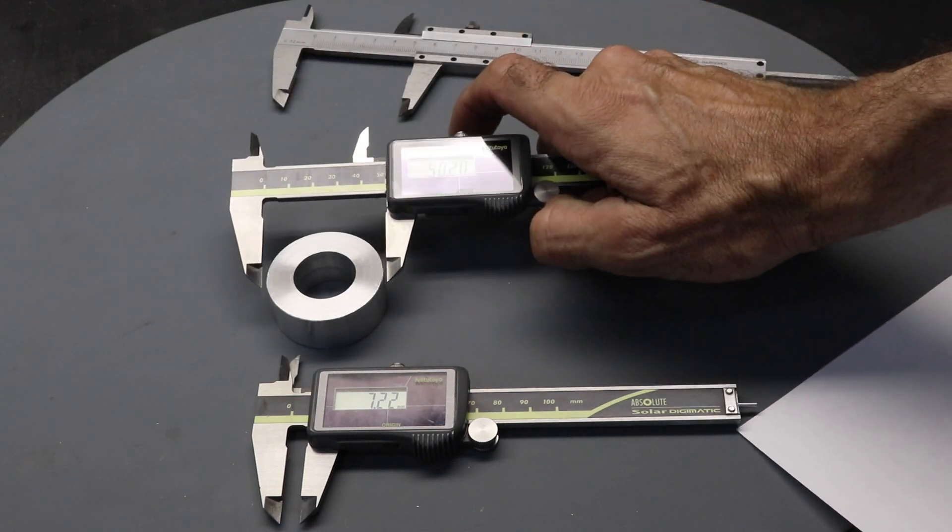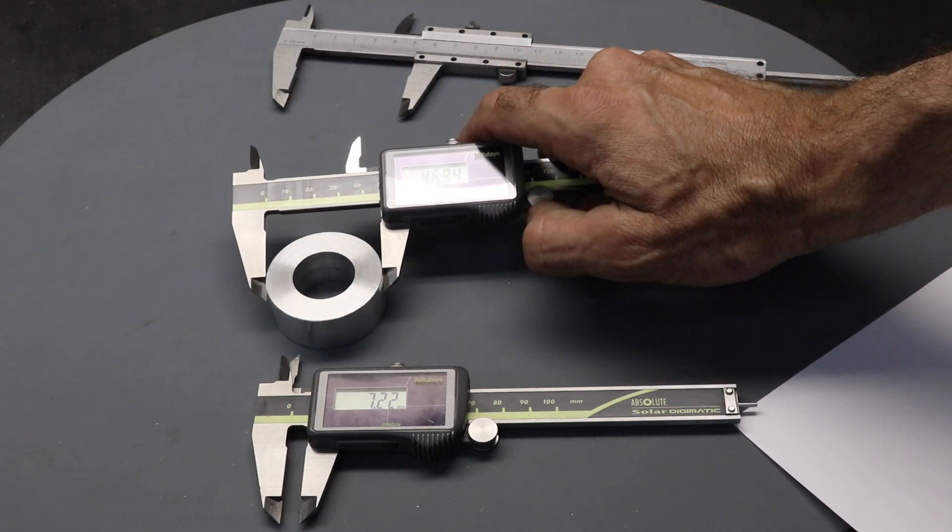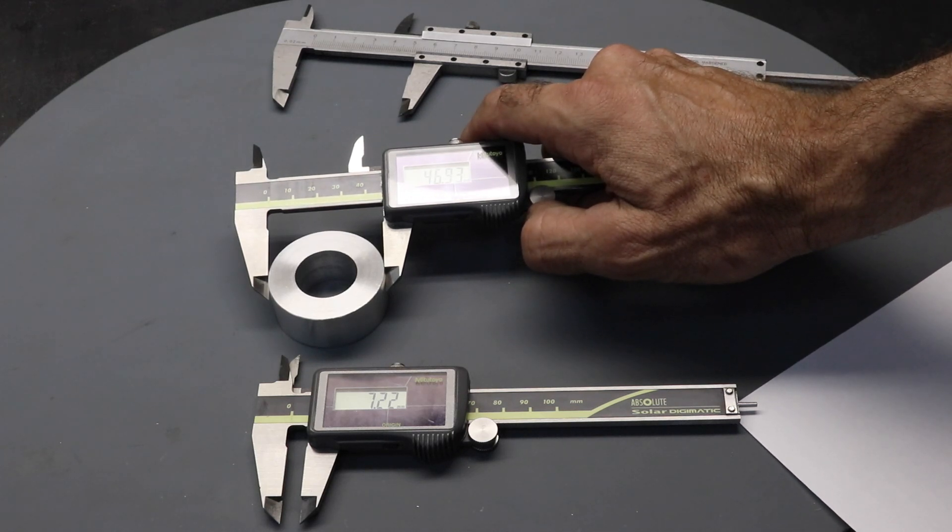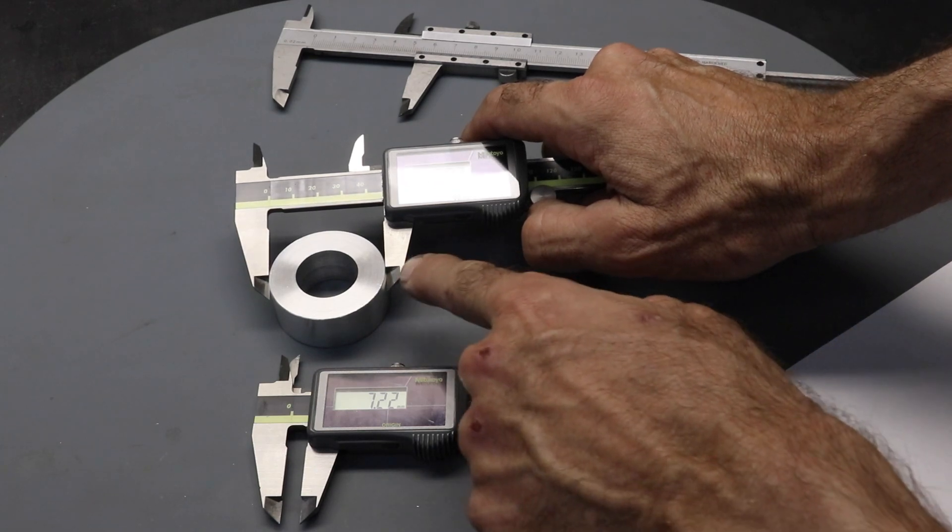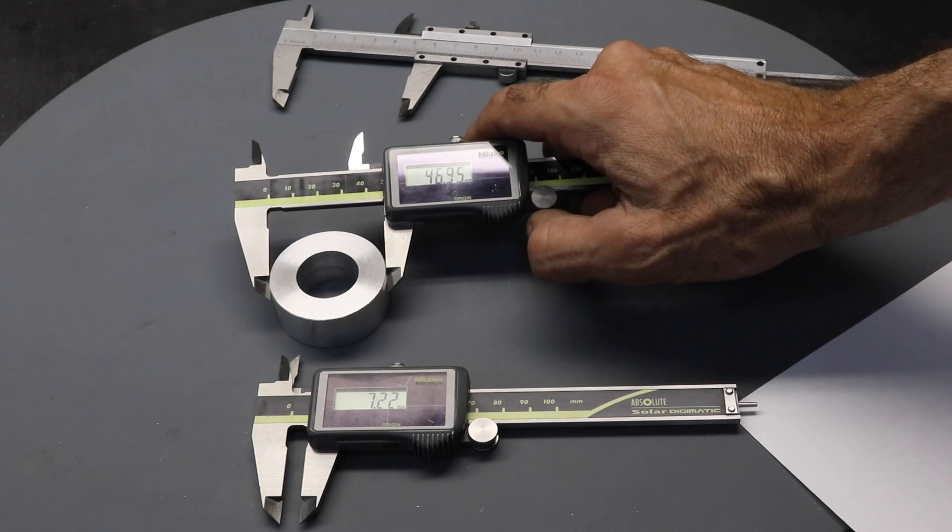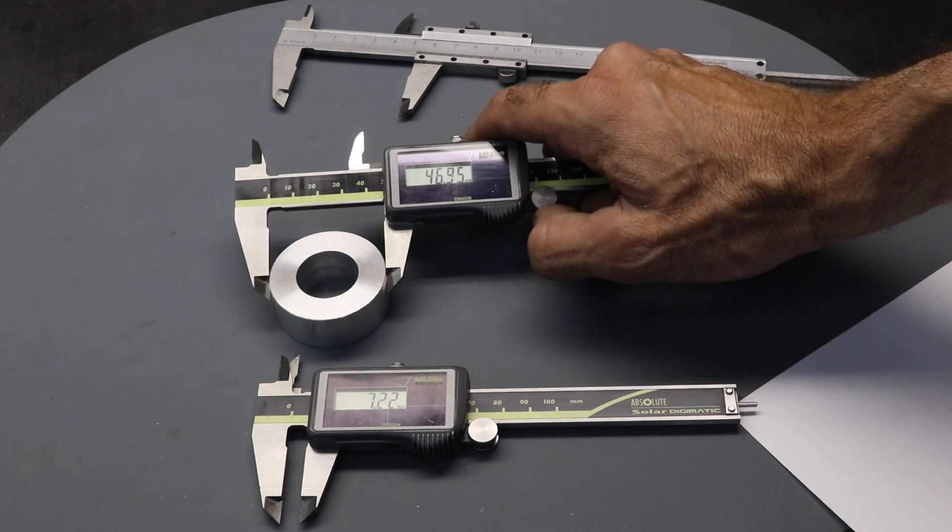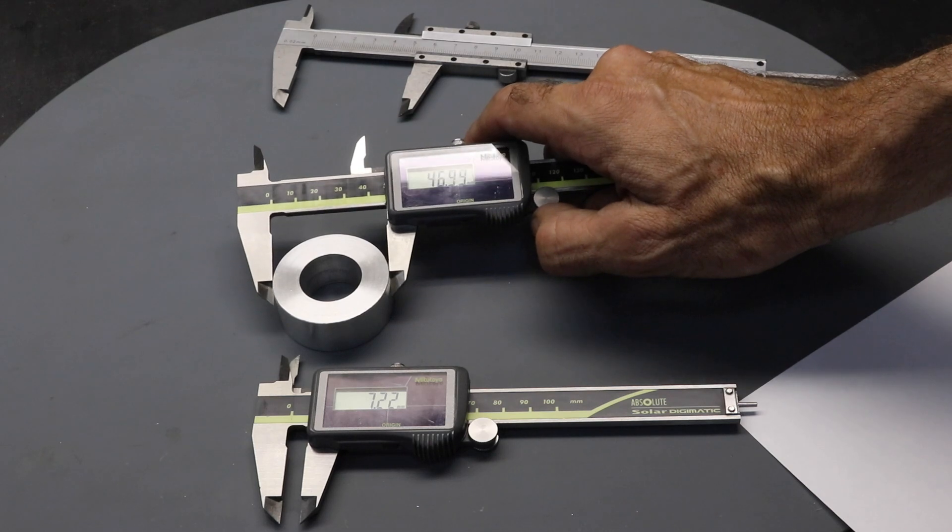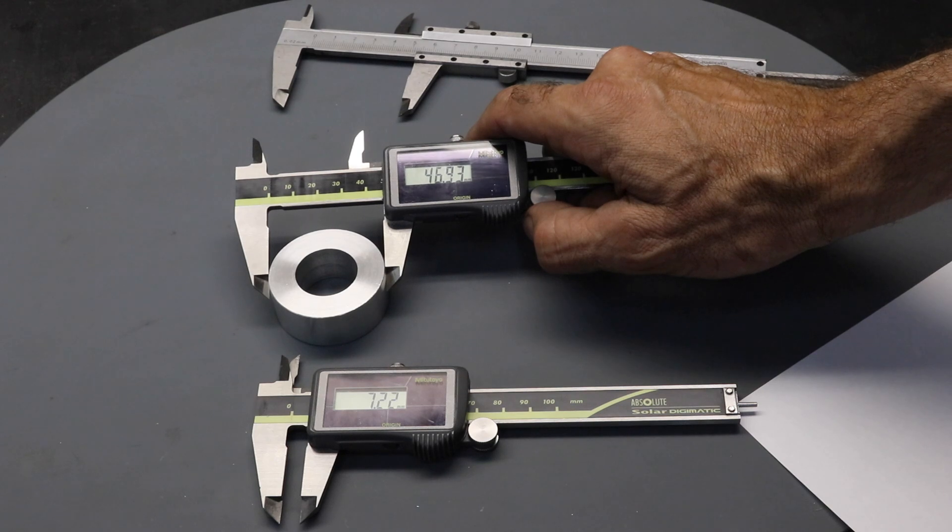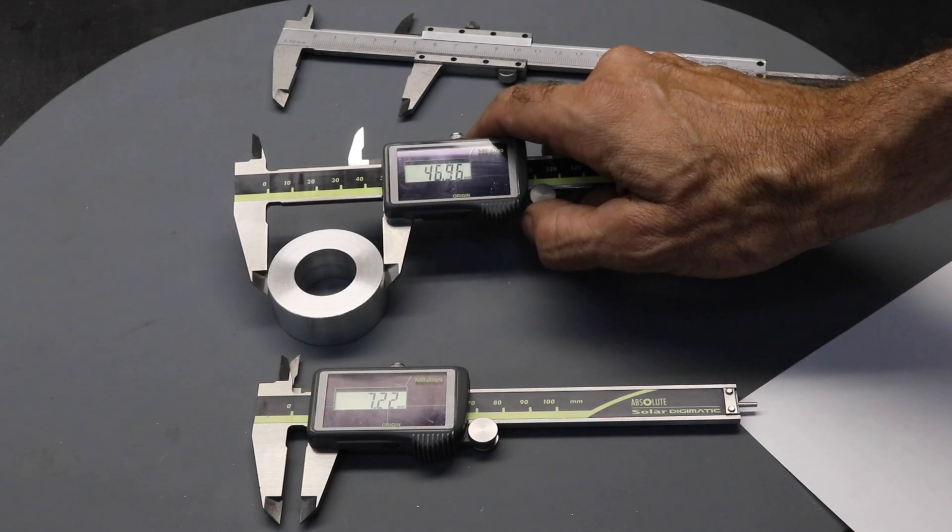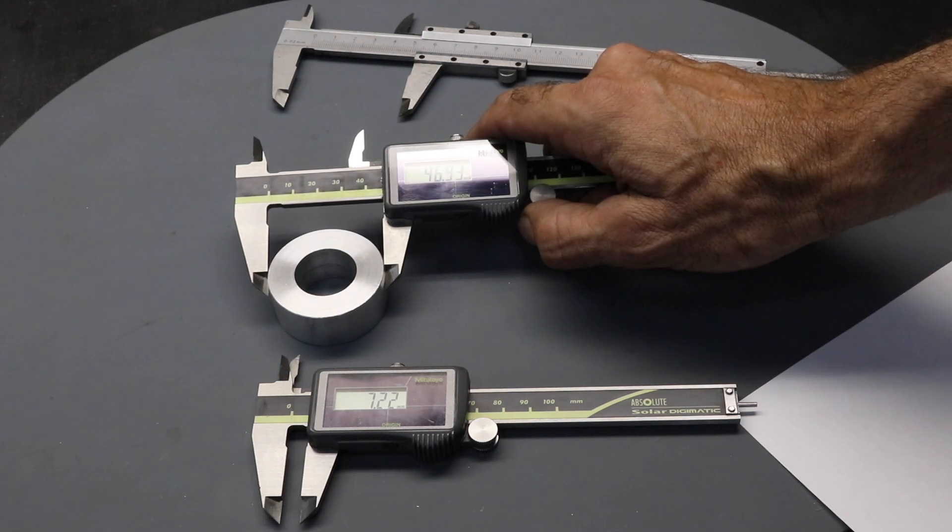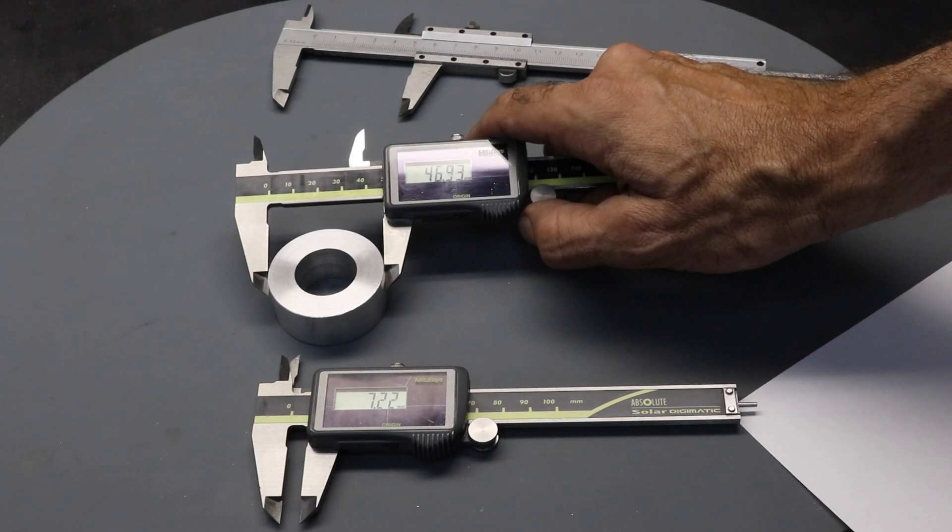When you start your measurement, if you're measuring the diameter of something, it's important that you align the jaws correctly across the piece you're measuring. The height of both jaws should be the same. And then you have to apply some pressure to the jaws. These digital calipers have a thumb wheel which allows you to apply pressure to the jaws. And this is something you build with experience and use.